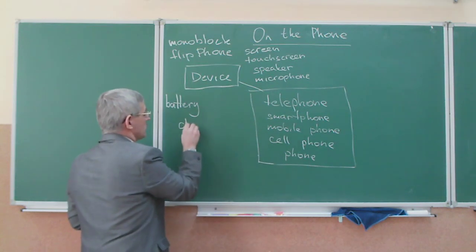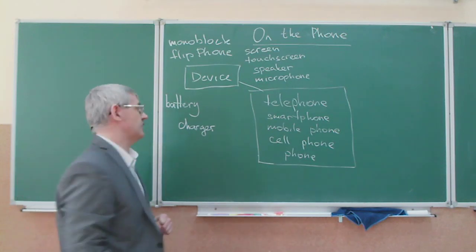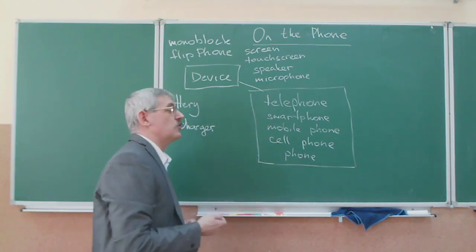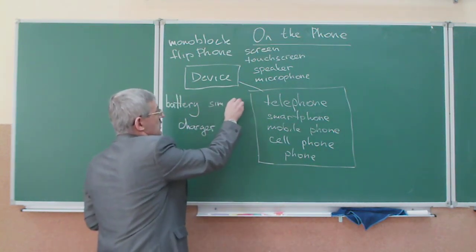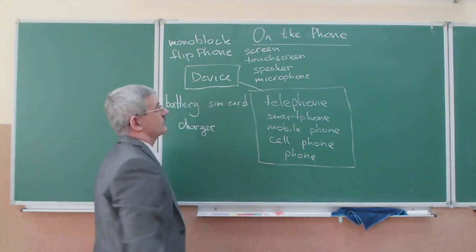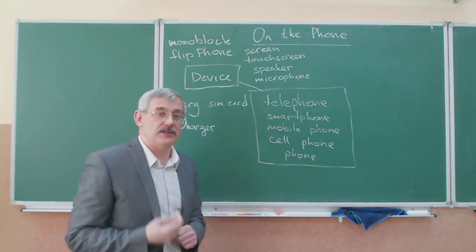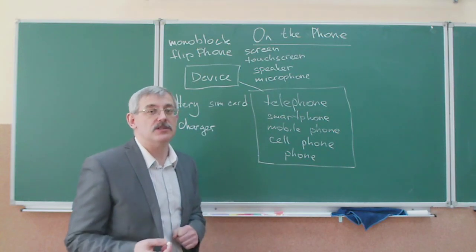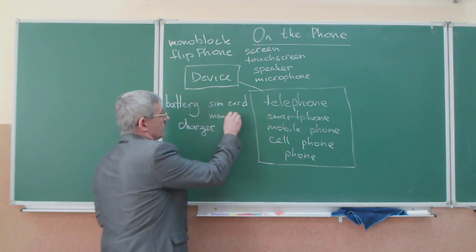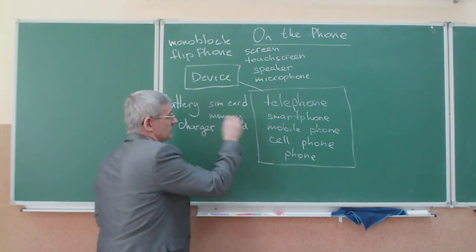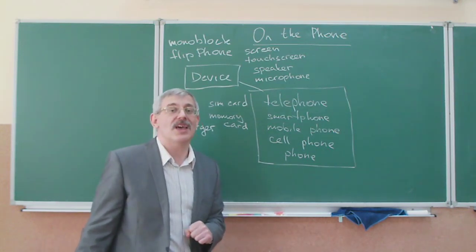To charge the battery, you need a charger. You cannot talk on the telephone without a SIM card. You can also store information and photos on your phone, and for that purpose you need a memory card. And the last thing — most people use headsets.